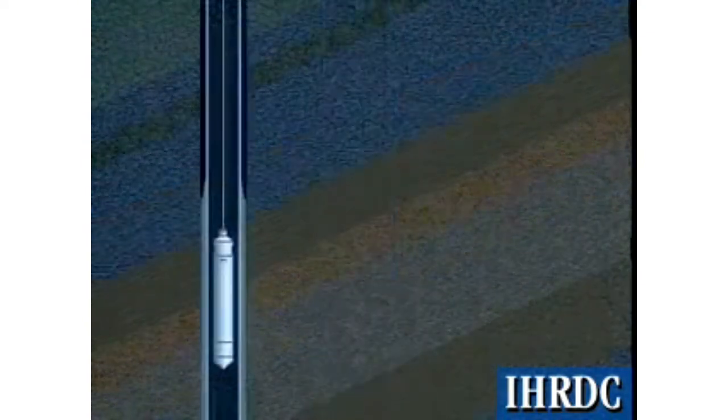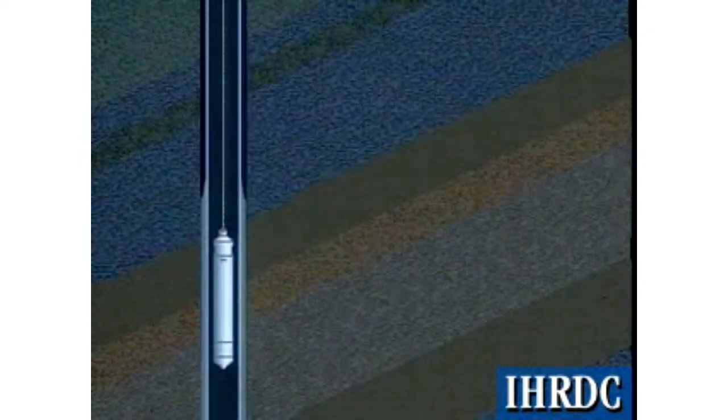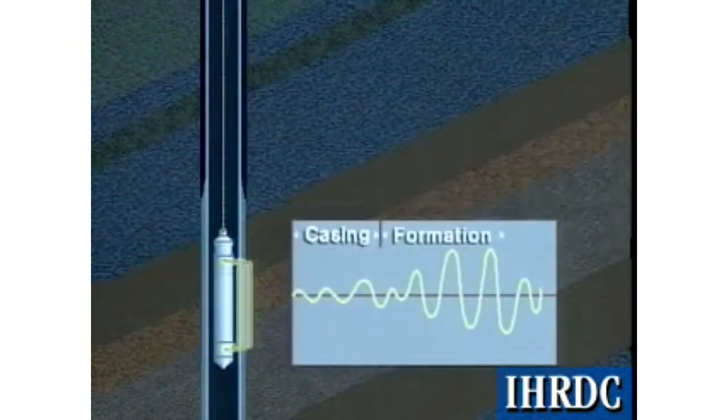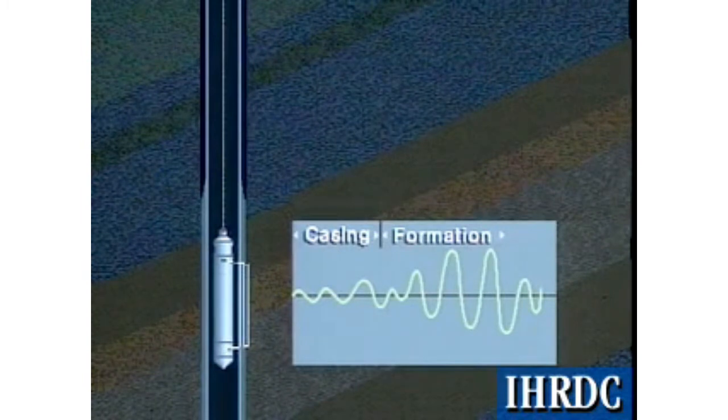Cement contacting the casing tends to dissipate or attenuate the signal energy as the signal propagates through the pipe. The greater the area of cement contacting the pipe, the weaker the signal at the receiver.